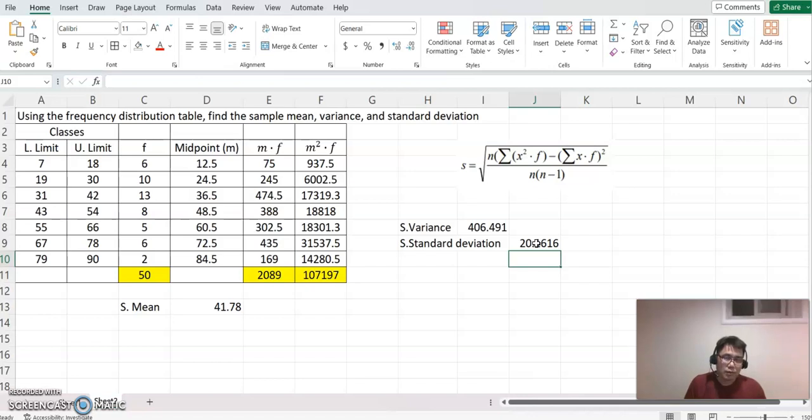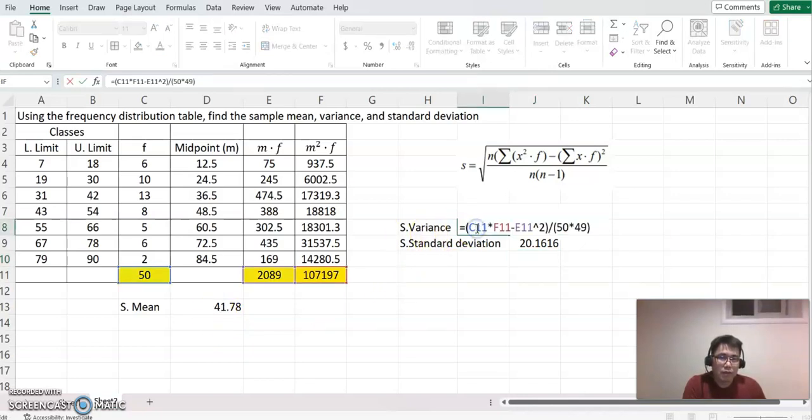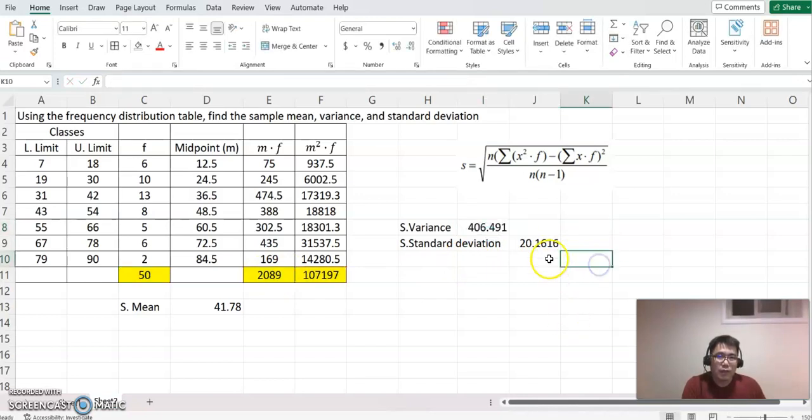Again, sample mean: you are dividing this number by total frequency, this number. That's why we got 41.78. For sample variance, we are making the calculations: total number times the last column minus the third column squared, close the parentheses, make division sign, and 50 times 49.